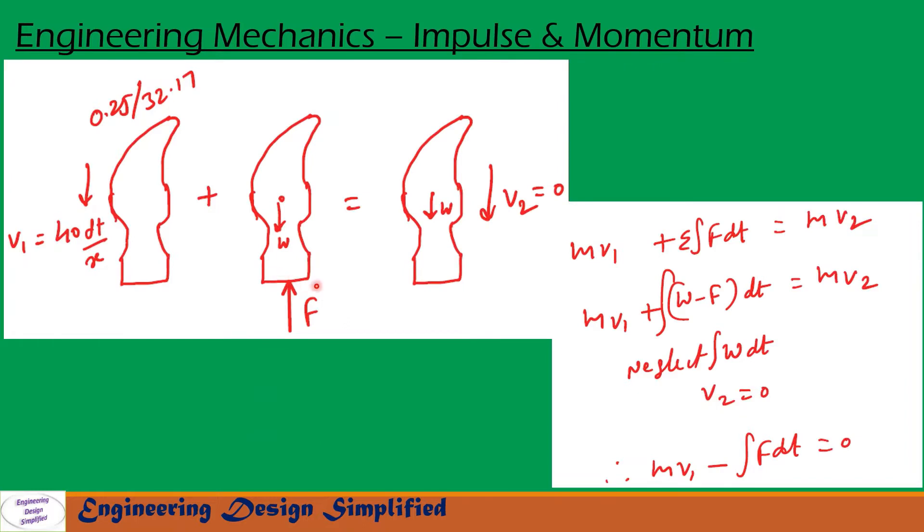First, let us see the impulse momentum diagram for the hammer. So initially the hammer weight is 0.25 lb and it moves with a velocity of 40 feet per second. So initial momentum of the hammer can be written as m v1.